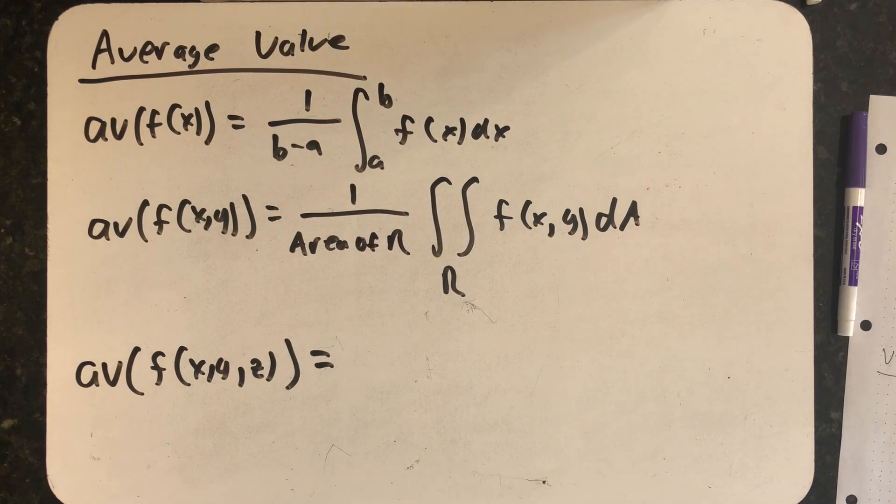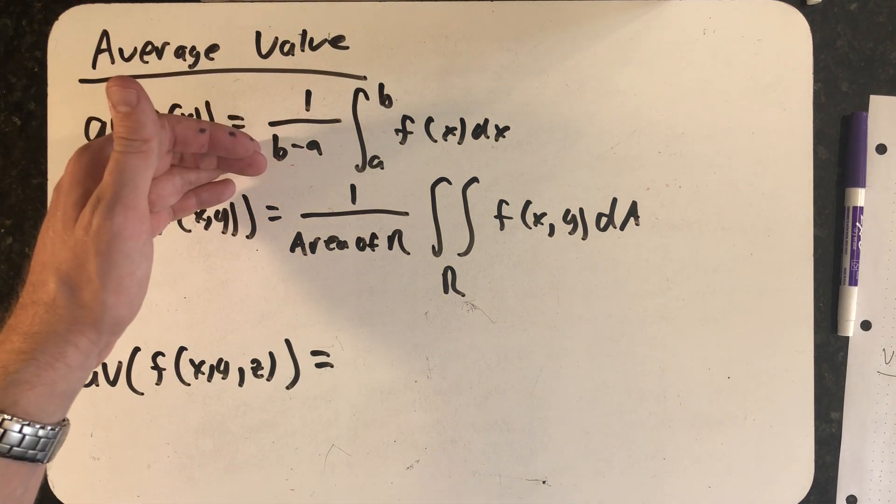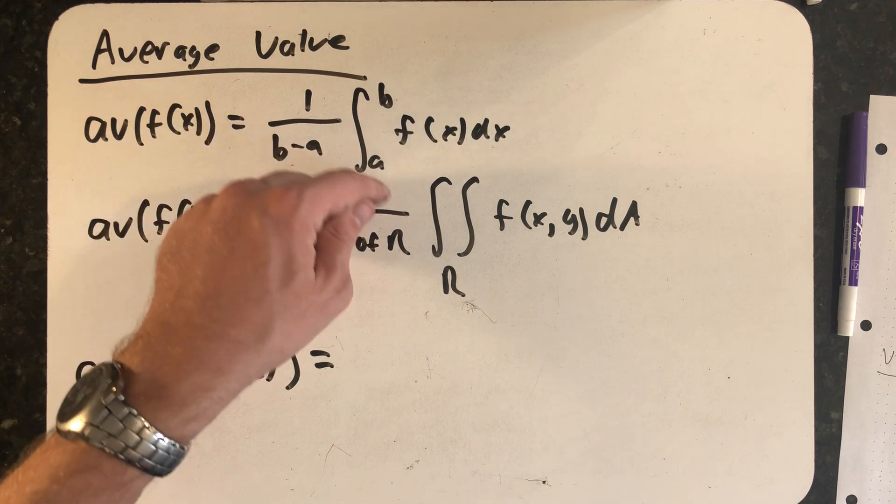Earlier in this unit we talked about average value and we derived the formulas for average value of a function of one variable: 1 over b minus a times the definite integral from a to b of f of x dx.